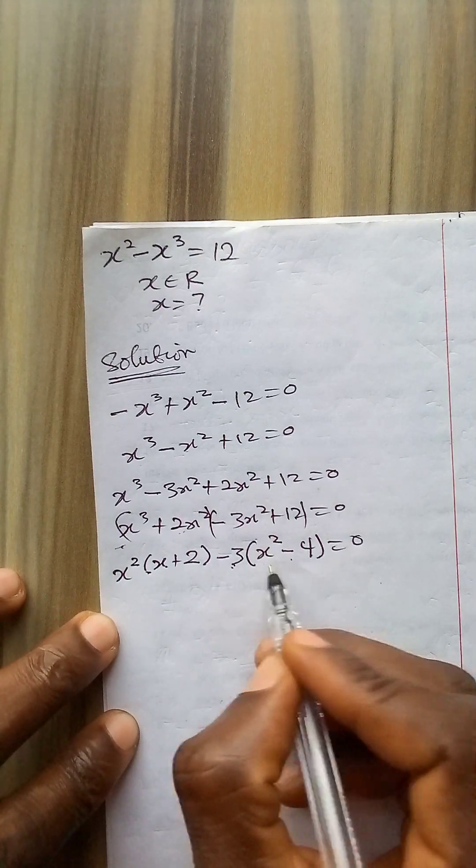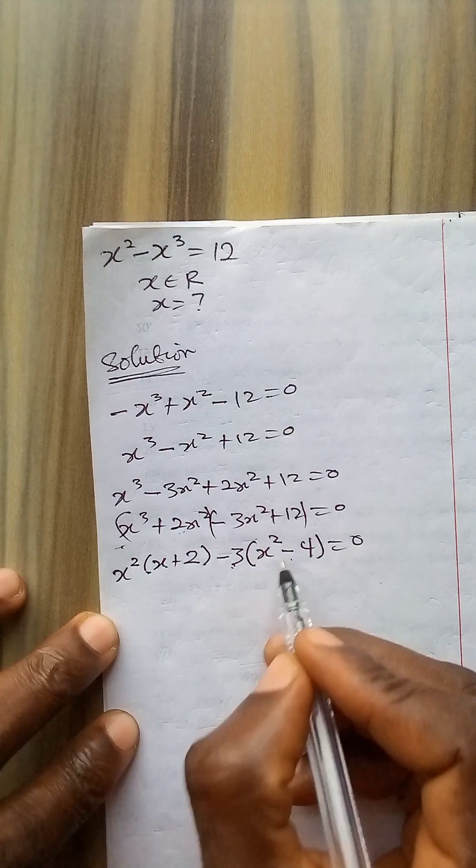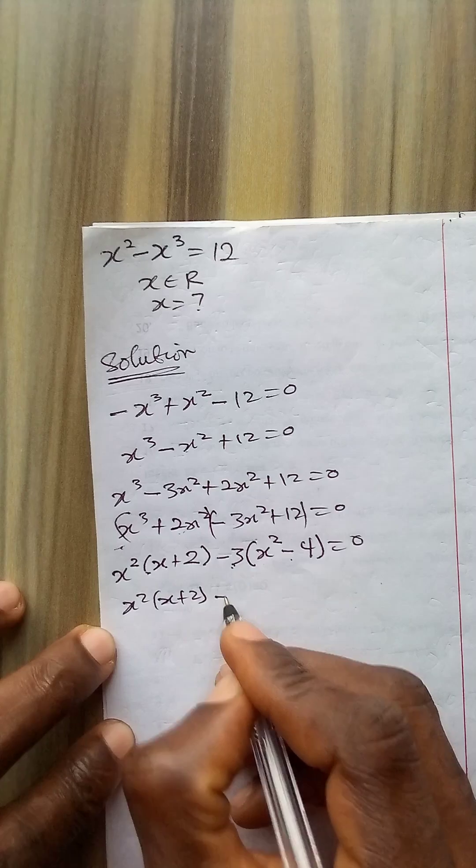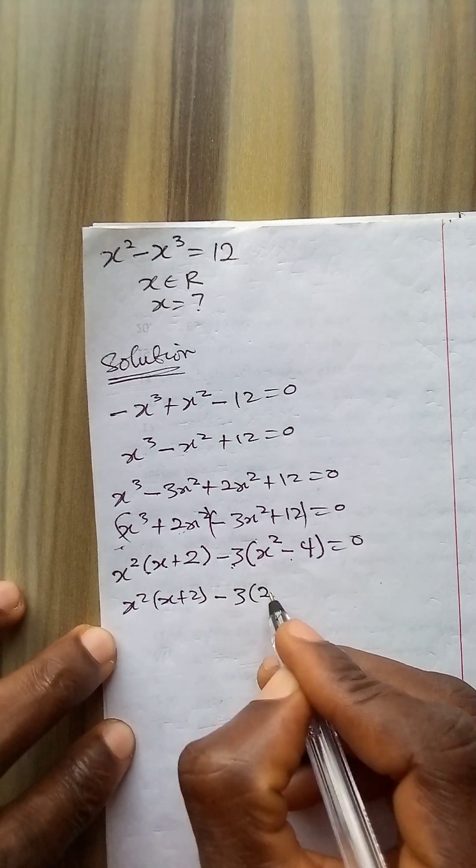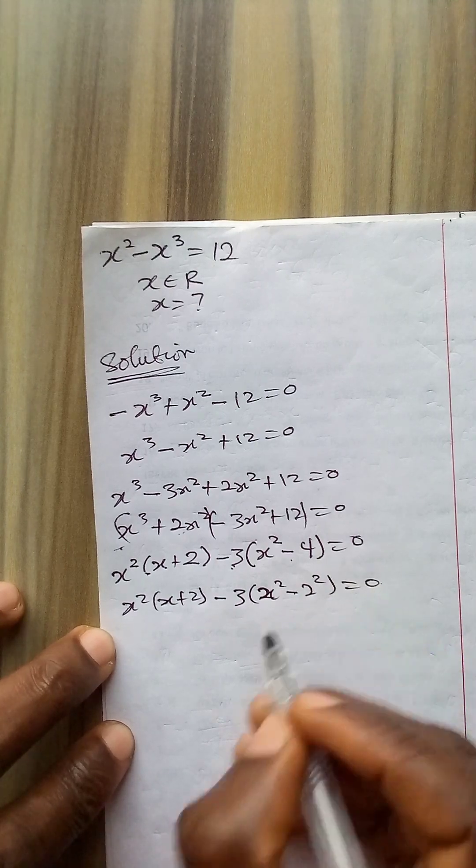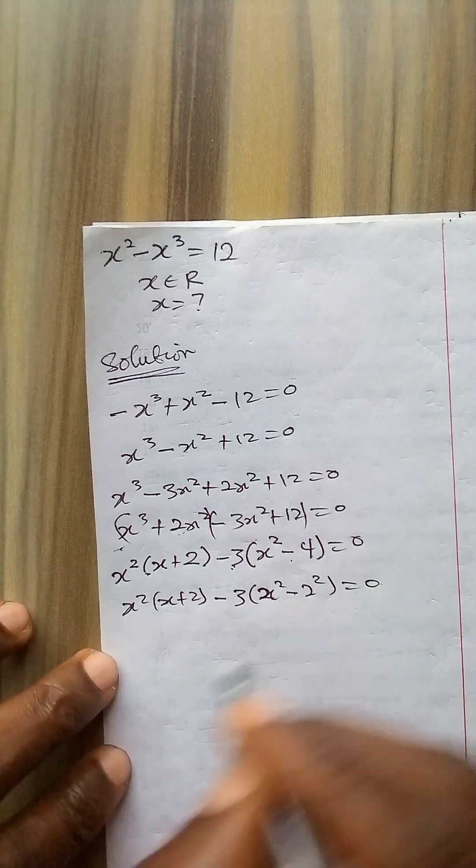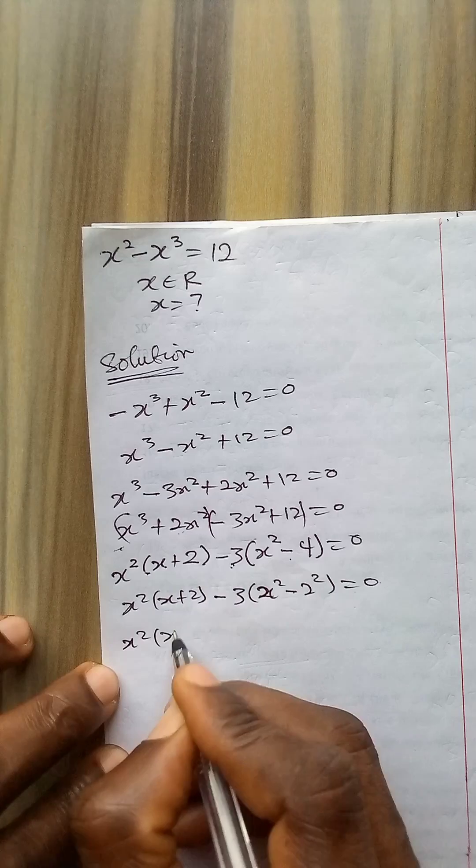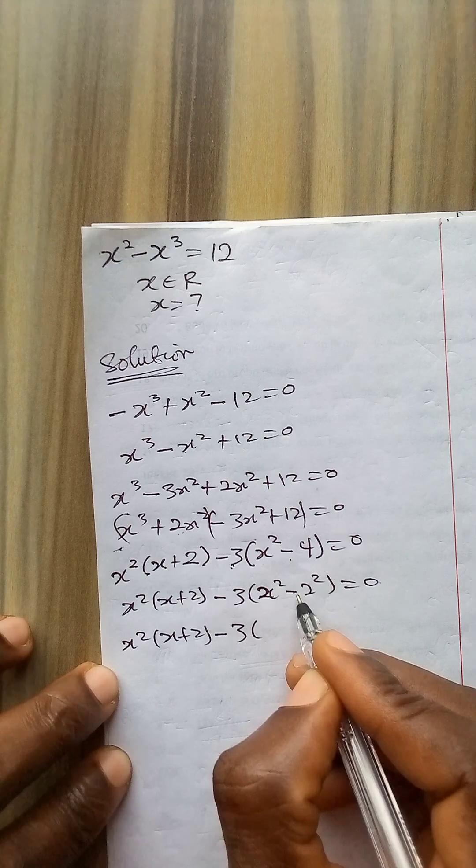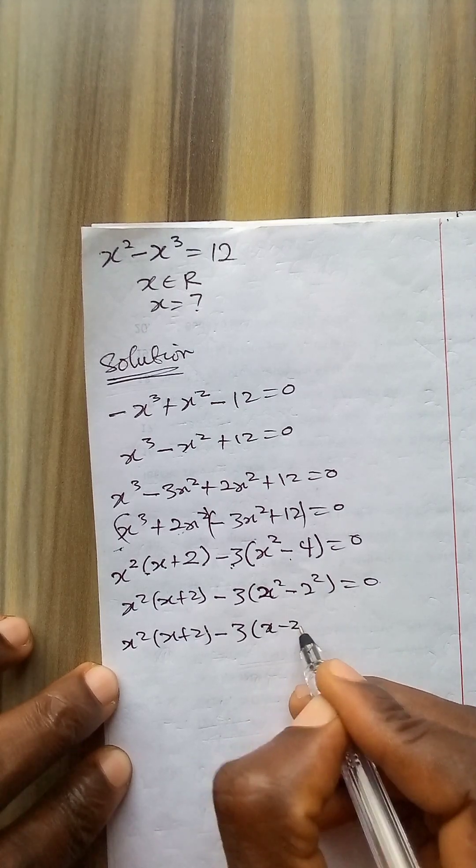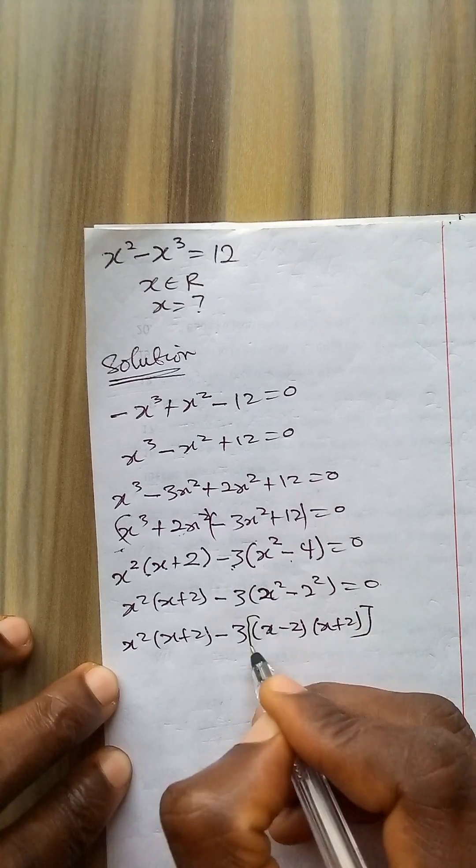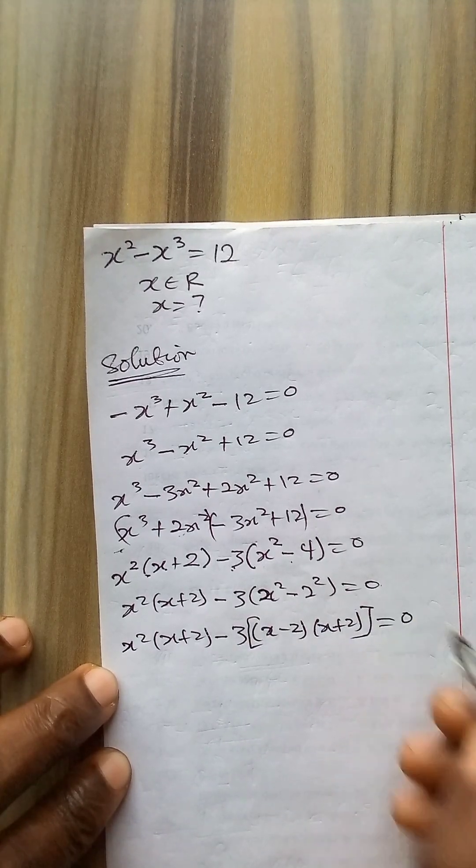We can see this is difference of 2 squares. So I will write it as x squared times (x plus 2) minus 3(x squared minus 2 to power 2) equals 0. I have difference of 2 squares here. So it becomes x squared (x plus 2) minus 3, then express this difference of 2 squares as (x minus 2) times (x plus 2), equals 0.